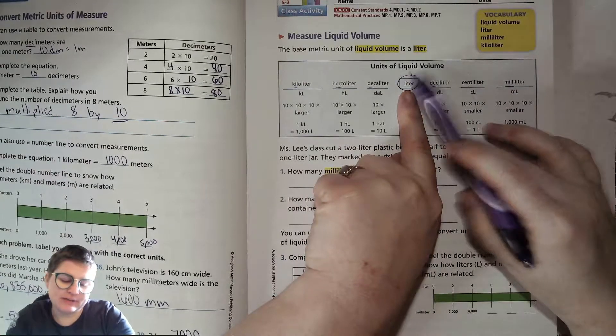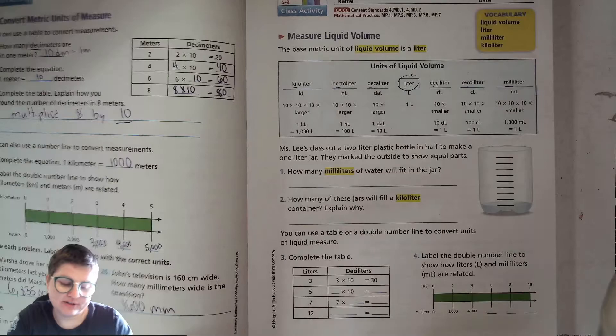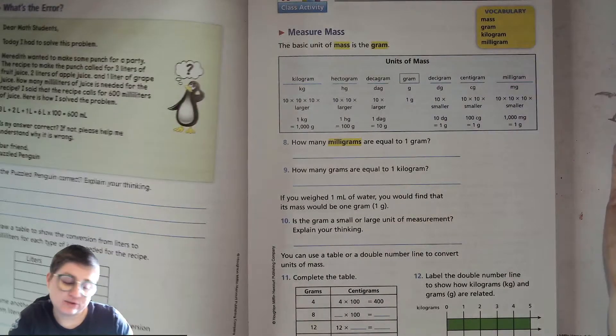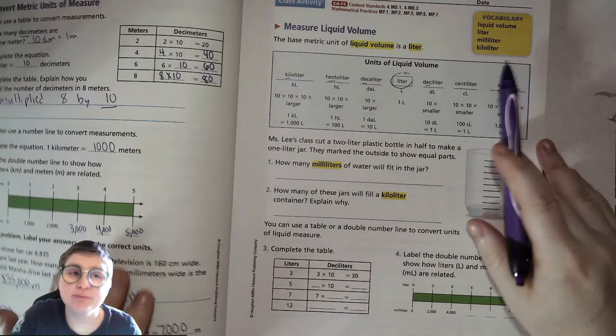So all the prefixes stay the same. For liquid volume, it's a liter. For distance, meter. And then for mass, gram, kilogram, milligram. Basically, it's pretty cool.